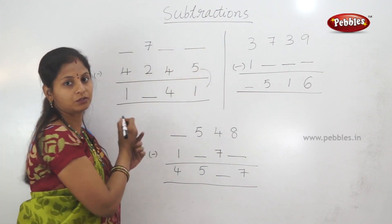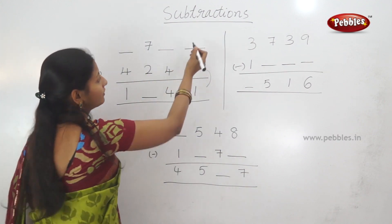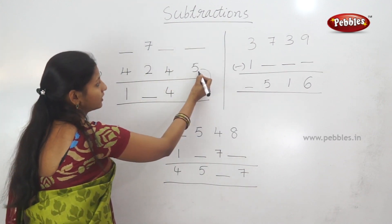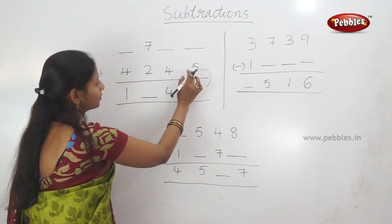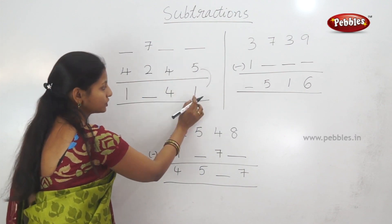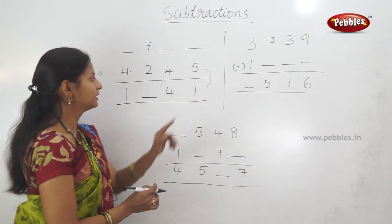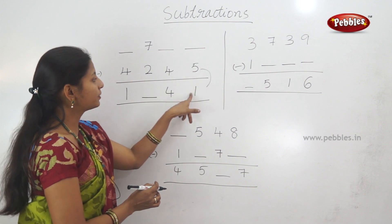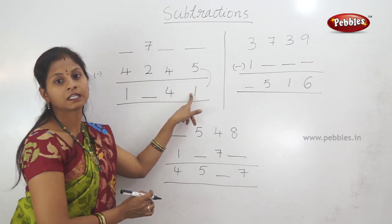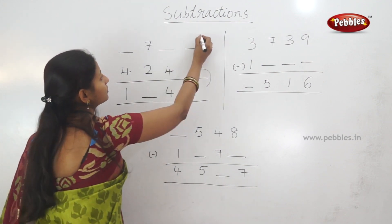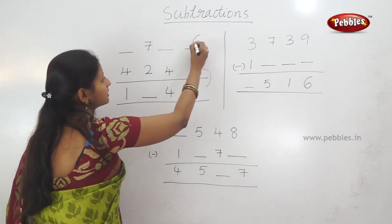Here, there is one space. We will add the smallest number and the second row. Add the answer to the smallest number and the second row. So, 5 plus 1 is 6. The number is 6.